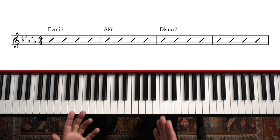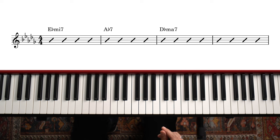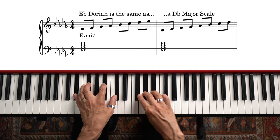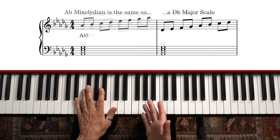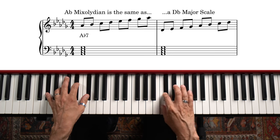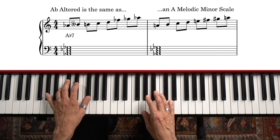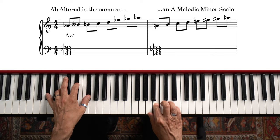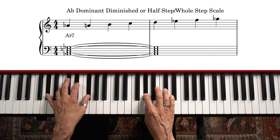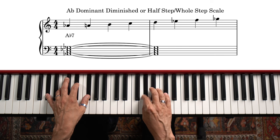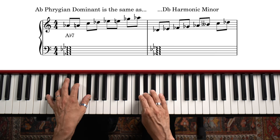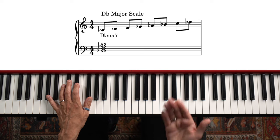The next four bars are a 2-5-1 progression in the key of D-flat major. On the E-flat minor 7, the 2 chord in D-flat, we'll use E-flat Dorian, which is the same as a D-flat major scale. On the A-flat 7 there are several choices: A-flat Mixolydian, which is also the same as a D-flat major scale; A-flat altered, which is an A melodic minor scale; A-flat dominant diminished, also called a half step whole step scale; or A-flat phrygian dominant, which is a D-flat harmonic minor scale. On the D-flat major 7 chord we'll use a D-flat major scale.